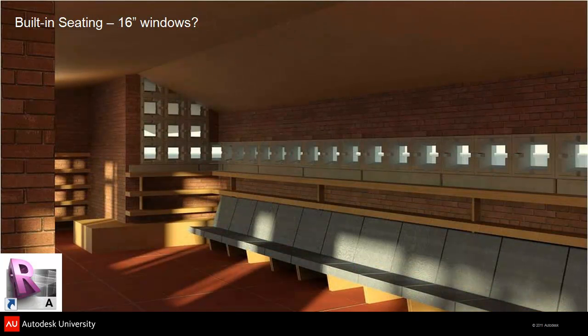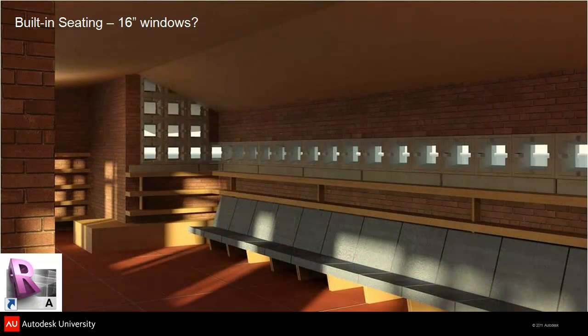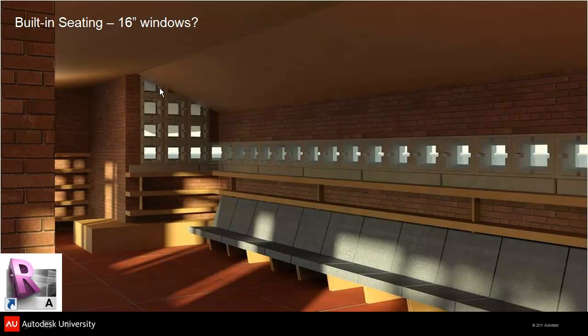If I look at it as 16-inch windows, they look like that — so here's the two-foot and here's the 16-inch. There's no real clear idea about how situations like this are going to be reconciled. I can't imagine we're going to have individual precast blocks to meet these conditions where there's a sloping roof.